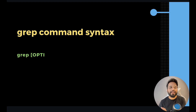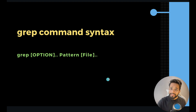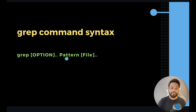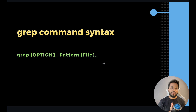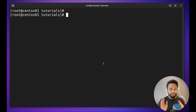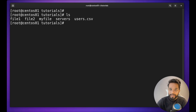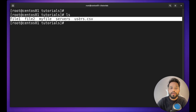Let's have a look at the syntax of the grep command. It is very simple: grep, then an option — the option is optional — and we will see a lot of examples of options. After that, the pattern, which could be a string, keyword, or pattern, and then the file name. For example, combining grep with other commands: if I do `ls`, it gives you all the files.